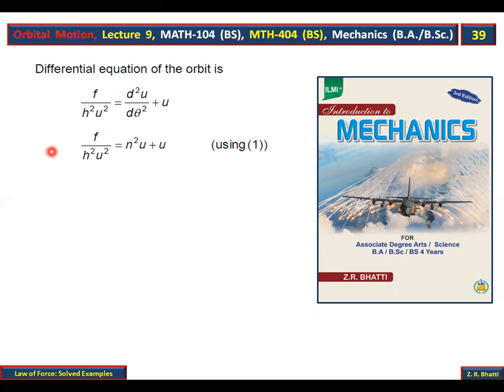Now you have the value of d squared u d theta squared. We put here n squared u. You have to get f out. f equals n squared plus 1 into h squared u cubed. Since n and h squared are constant, u cubed equals 1 over r cubed, so f is proportional to 1 over r cubed. f is inversely proportional to r cubed.